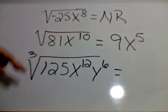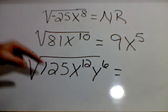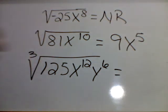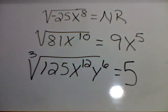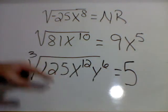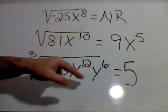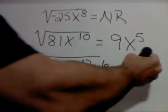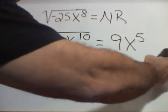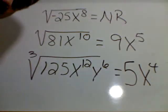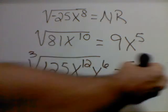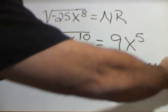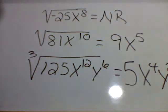First of all, the number times itself three times that gives me 125 is 5. Now, divide both of these variables by 3. On the x's, 12 divided by 3 is 4. On the y's, 6 divided by 3 is 2.